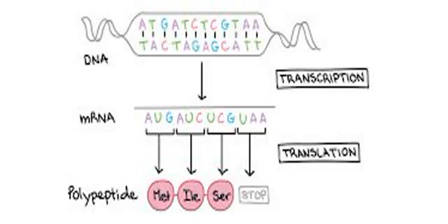All of these processes form part of the central dogma of molecular biology, which describes the flow of genetic information in a biological system. As in DNA, genetic information in mRNA is contained in the sequence of nucleotides, which are arranged into codons consisting of three ribonucleotides each.